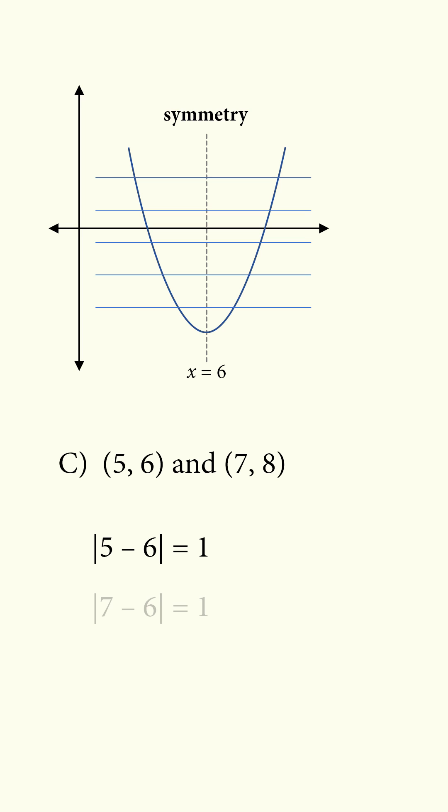In answer choice C, the two pairs of points have the same distance to x = 6, but their y coordinates are not equal to each other.